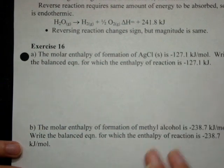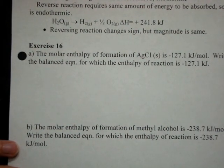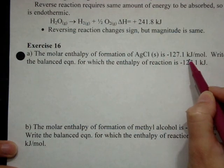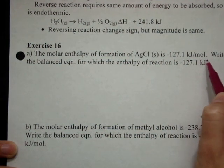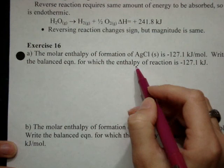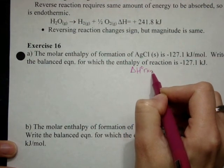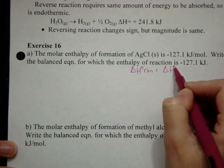All right, let's go down to exercise 16. The molar enthalpy of formation for silver chloride is negative 127.1 kilojoules per mole. Write the balanced equation for which the enthalpy of reaction equals the enthalpy of formation.